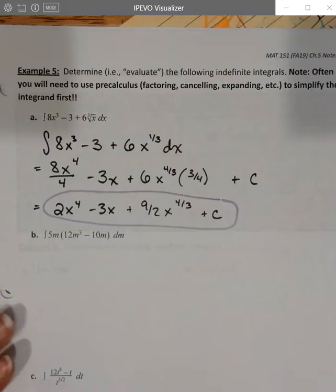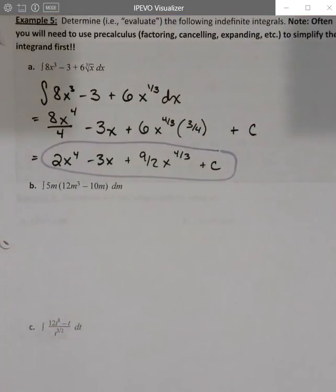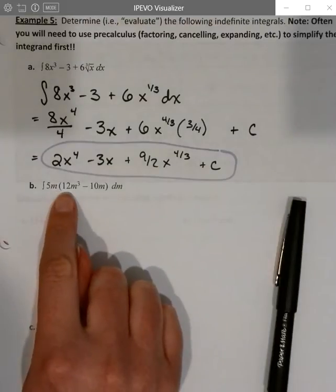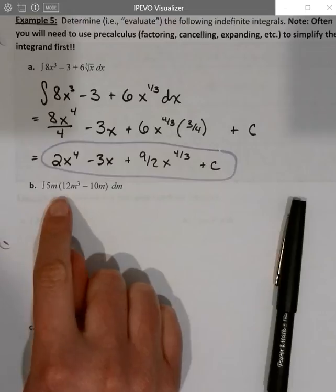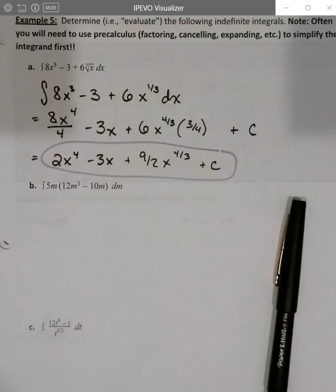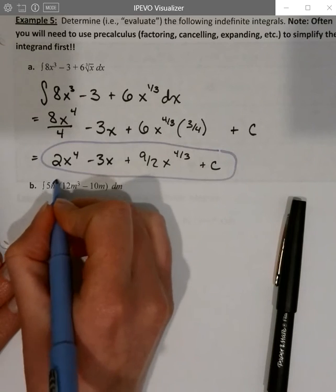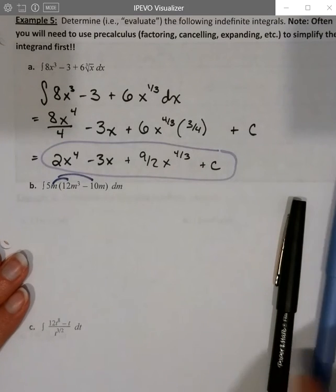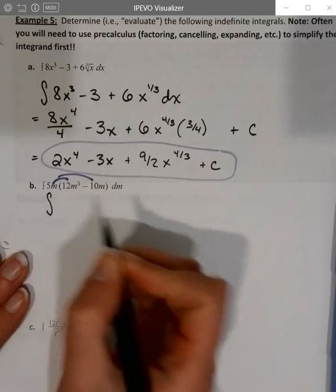A couple more. Remember, if there's ever a time when you look at something and think, ooh, I would need to use a certain rule to differentiate this, you can't integrate it the way it is. So, for example, products. So instead, I'm going to distribute this. We're going to get this distributed first and then integrate term by term. We cannot integrate a product piece by piece. You can't differentiate a product piece by piece either. So don't try.